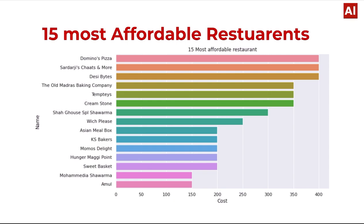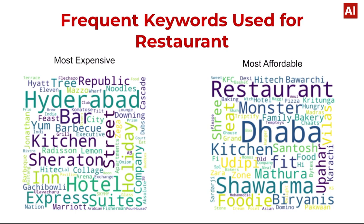The next slide shows the 15 most affordable, low-cost restaurants. Amul is a very cheap and affordable restaurant. Mohammad Swarna is also cheap, and Domino's Pizza has the maximum price among affordable restaurants at around 400. Word clouds are used for the most expensive and most affordable restaurants. For expensive ones, keywords include Hyderabad, bar, kitchen, hotel, express, and soup. For affordable ones, keywords include dhaba, kitchen, Santos, madhura, shawarma, biryani, etc.